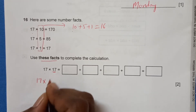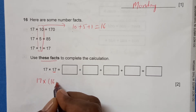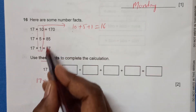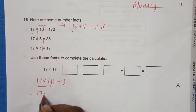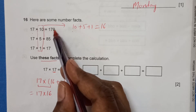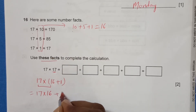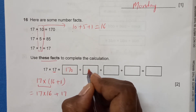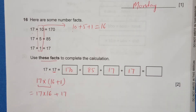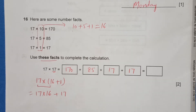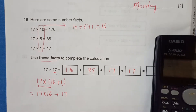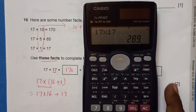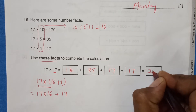Since 17 can be written as 16 plus 1, we use 17 times 16 plus 17 times 1. Adding 170 plus 85 plus 17 gives us the total. Since this is Paper 2 and we can use a calculator: 17 times 17 equals 289. So the answer is 289.